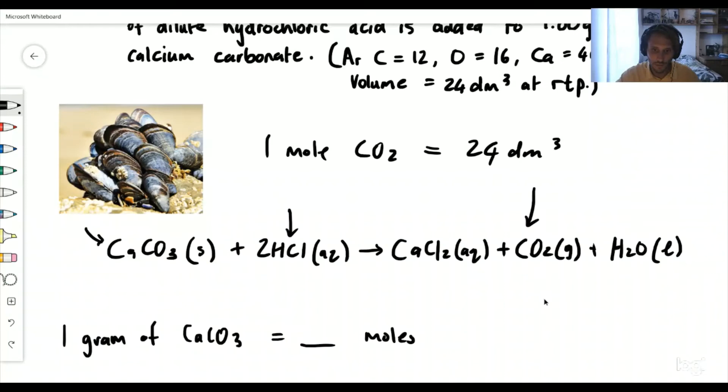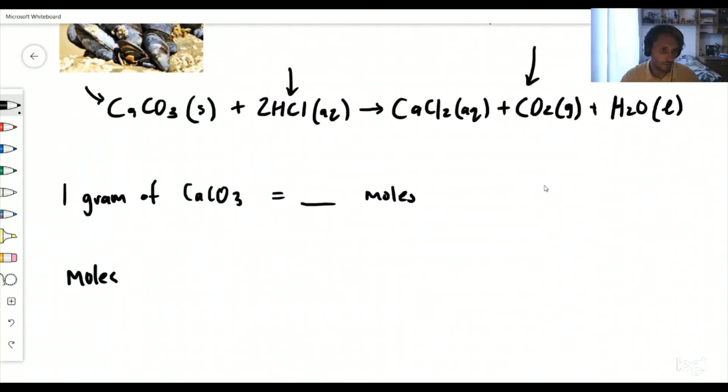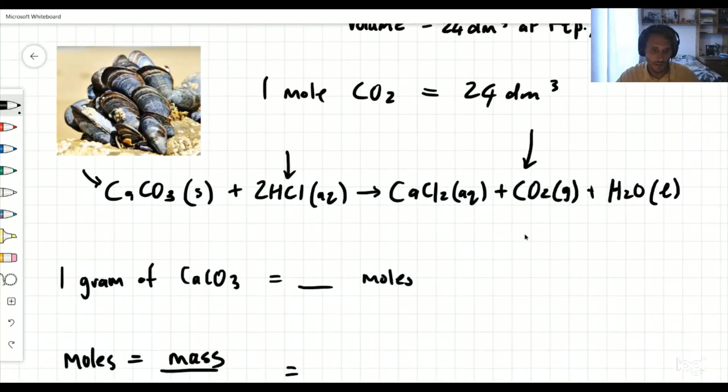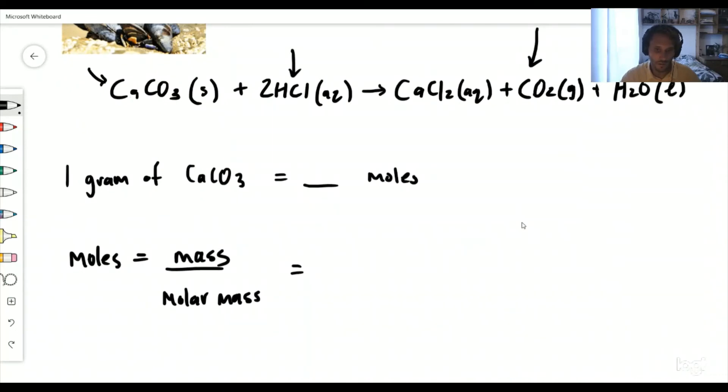One gram of CaCO3 is going to equal a certain number of moles. To do this, we simply use our equation which says the number of moles is equal to the mass over its molar mass. The molar mass from the equation: carbon is 12 grams per mole, oxygen 16, and calcium 40. We can calculate this by going, we've got 1.00 grams. What's the molar mass? Calcium is 40, plus carbon which is 12, plus oxygen which is 16, but we need times this by 3. Crunch it into your calculator, it's going to work out to be 100. So 1 divided by 100 is 0.01 moles.